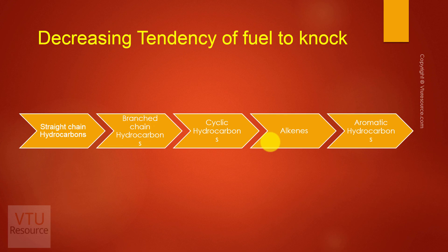The octane number of fuel used in India is around 85, whereas the octane rating of fuel used in western countries is 95 and above. The knocking tendency of fuel in western countries is less compared to India. We cannot simply use western country fuel in India because the engine design would need to be changed accordingly. So the octane number of Indian petrol is around 85, and we will discuss how to convert straight chain hydrocarbons to branched chain, cyclic, alkenes, or aromatics in our next discussion.